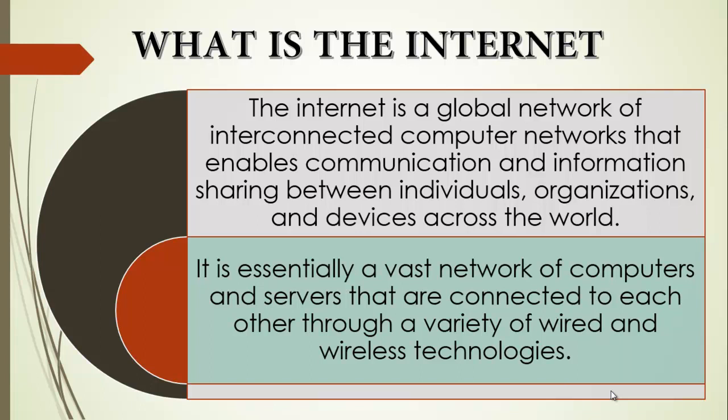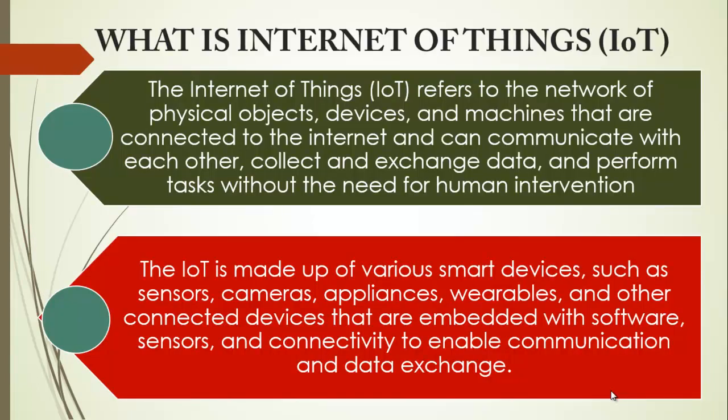We now move to the Internet of Things. What is the Internet of Things? It refers to the network of physical objects, devices, and machines that are connected to the Internet and can communicate with each other, collect and exchange data, and perform tasks without the need for human intervention. The Internet of Things, popularly referred to as IoT, is made up of various smart devices such as sensors, cameras, appliances, wearables, and other connected devices.